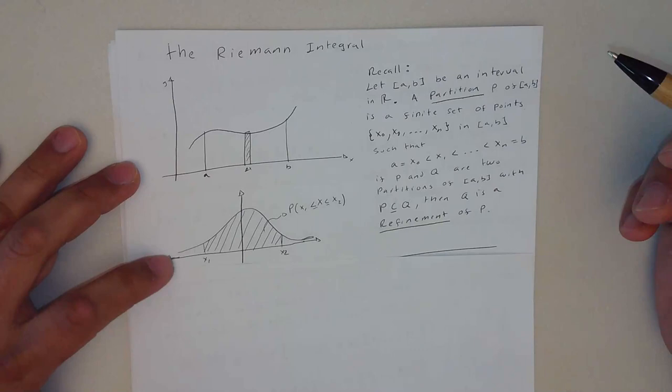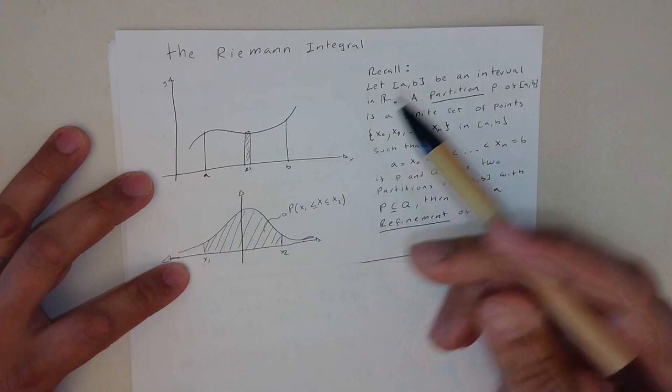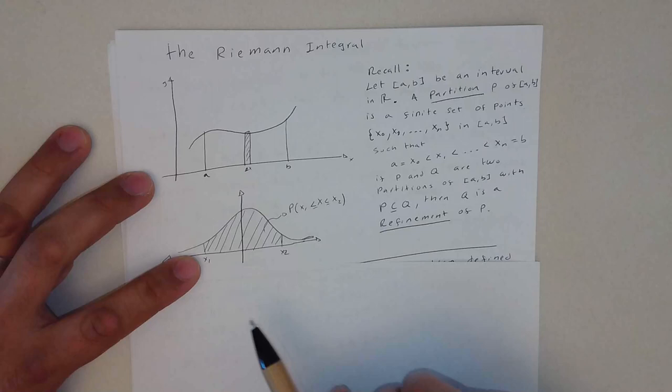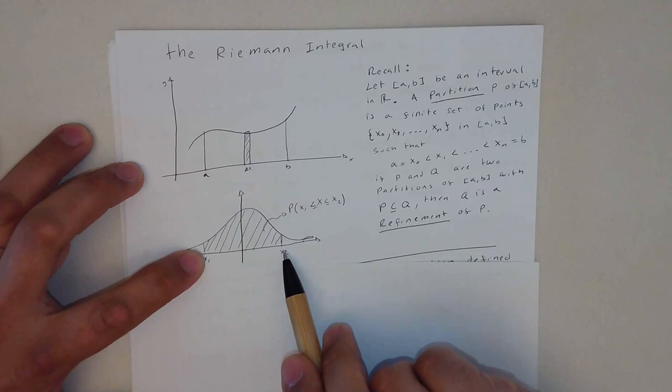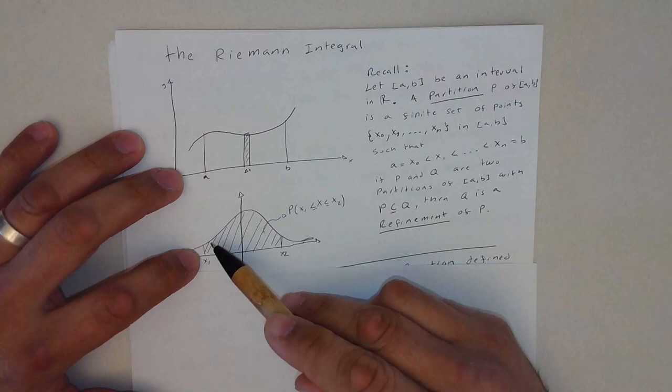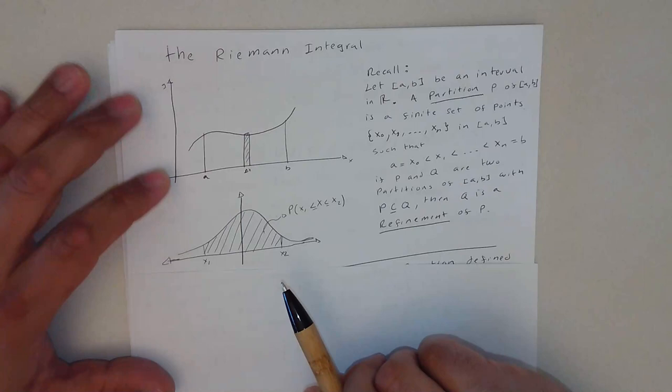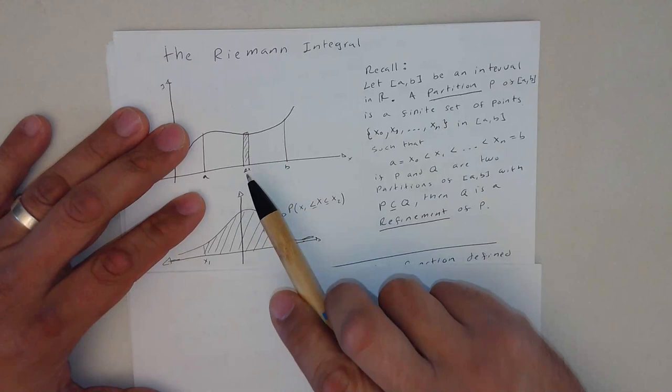Today I'm going to show the Riemann integral. As you may already know, the Riemann integral is trying to figure out the area of a function. Sometimes we really need this area, for example to obtain the probability of a distribution function. We need the area in between two numbers. Basically we have the interval, the closed interval, and the area will mark the probability in between these two numbers.